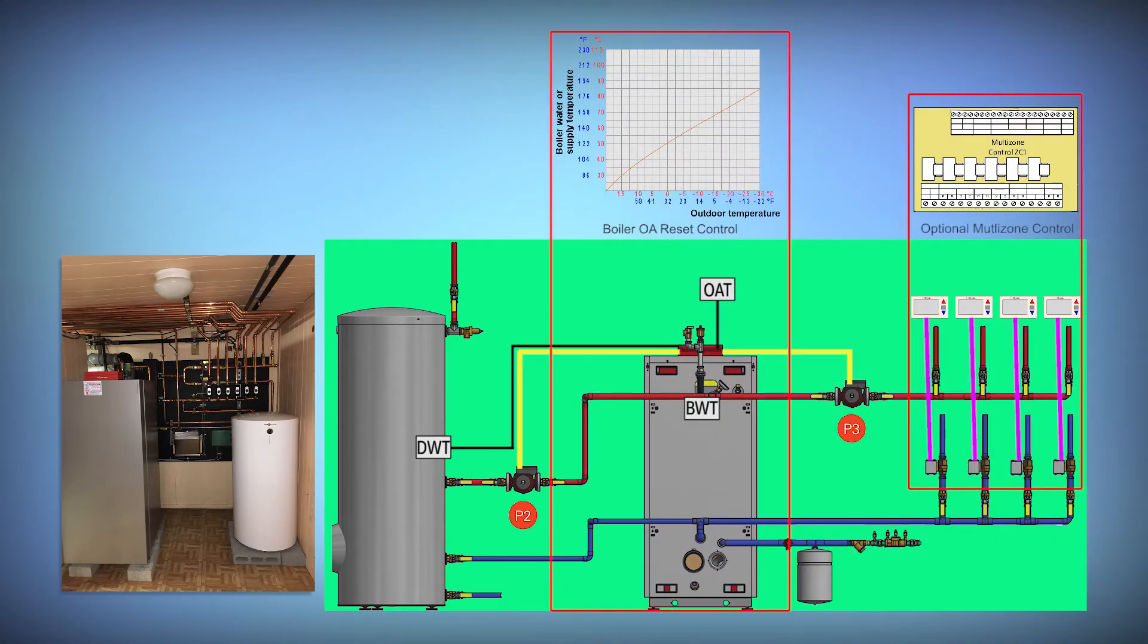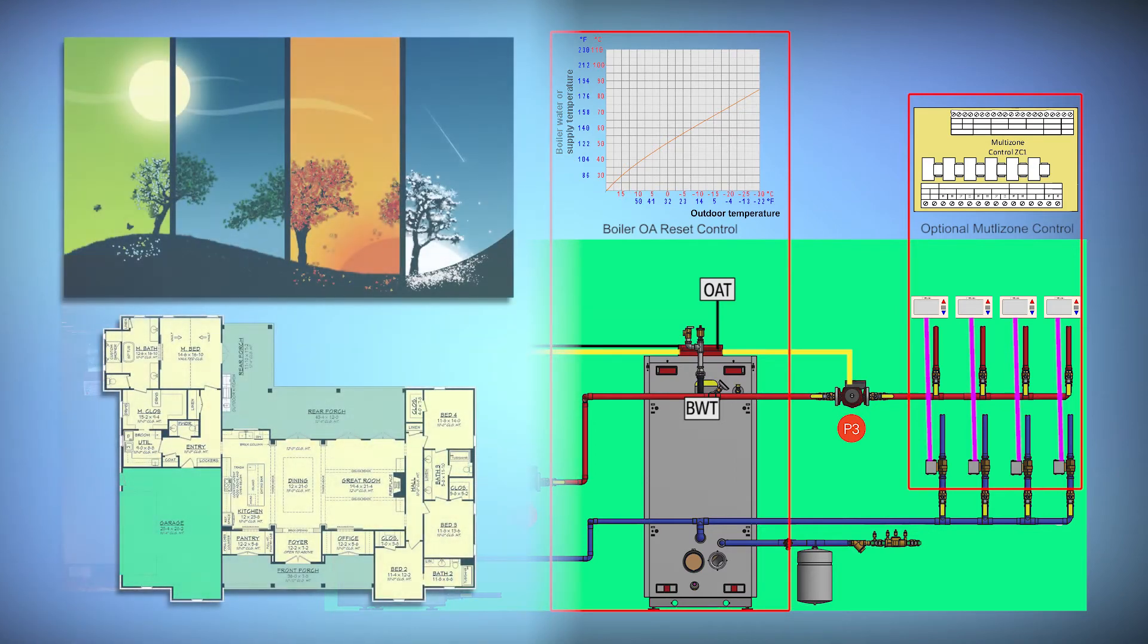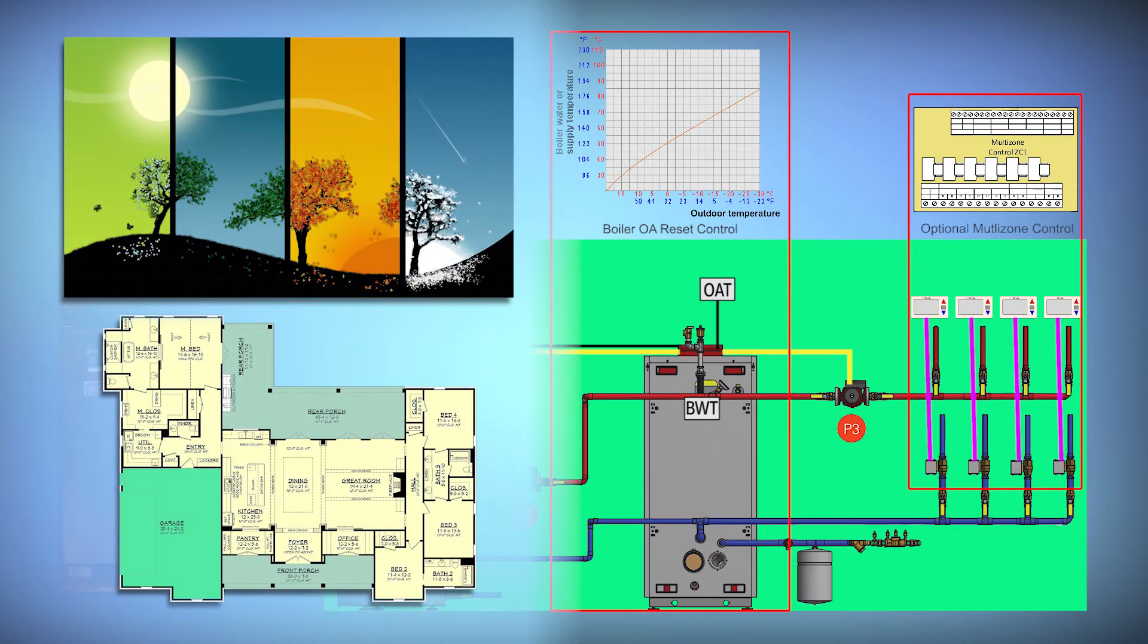Remember the modern boiler has an outdoor reset control so it can adapt its water temperature to the heat loss in the building based on outdoor temperature. It can also adapt to the zones that are opening and closing by seeing the water temperature coming through the boiler or the common supply sensor in a primary secondary system.